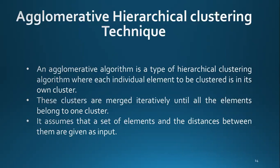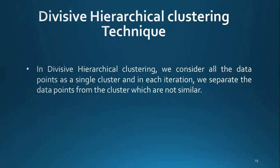Each data point is considered as an individual cluster in the agglomerative technique. At each iteration, similar clusters merge with other clusters until one cluster or K clusters are formed. The key operation is computation of the proximity of two clusters — how close these clusters are to each other. This technique finds the closest clusters. Therefore, it is a type of hierarchical clustering algorithm where each individual element starts in its own cluster. The divisive hierarchical clustering technique is not much used in the real world; the agglomerative technique is used more.